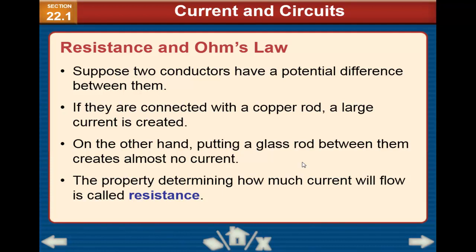Suppose two conductors have a potential difference between them. If they are connected with copper rods, a large current is created. On the other hand, putting a glass rod between them creates almost no current. The property determining how much current will flow is called resistance.